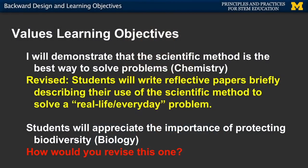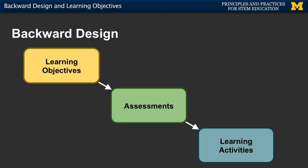Values-based learning objectives can be really challenging to write for two reasons. First, many of the values we expect students to adopt in our discipline are really ingrained in us as experts in our field, and we may not even think about making them explicit. Once we overcome that hurdle, it still is difficult to come up with active verbs to describe what a value system looks like. The best way to figure out how to phrase these learning objectives is to ask yourself: how will I know? On the screen, you can see how we've reworked one of the learning objectives from earlier in the video — how would you rework the other one?